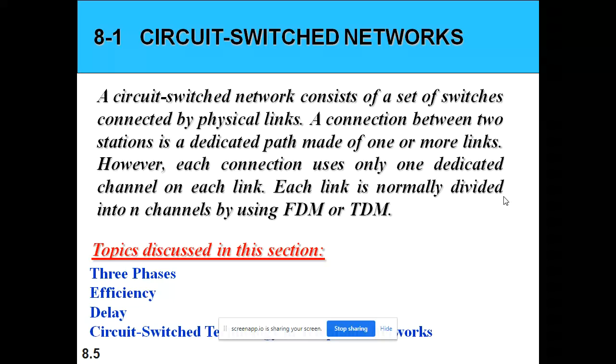First, we will see circuit switching network. What is this circuit switching network? It consists of set of switches connected by physical links. Connection between two stations is dedicated, made of one or more links. However, each connection includes only one dedicated channel on each link. Each link is normally divided into N channels by using frequency division multiplexing or time-division multiplexing as already we have seen in the previous topic. Here, in this we are going to discuss three phases of circuit switching, efficiency, delay, and circuit switch technology in telephone network.